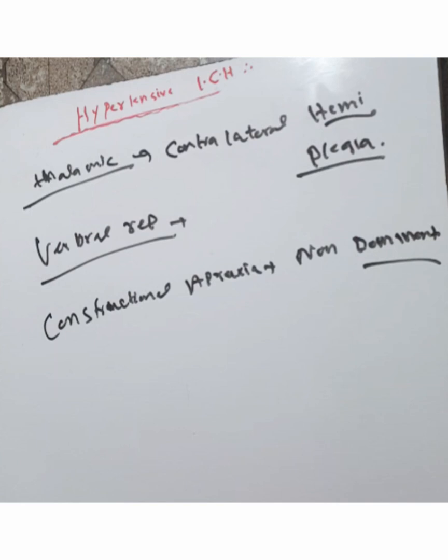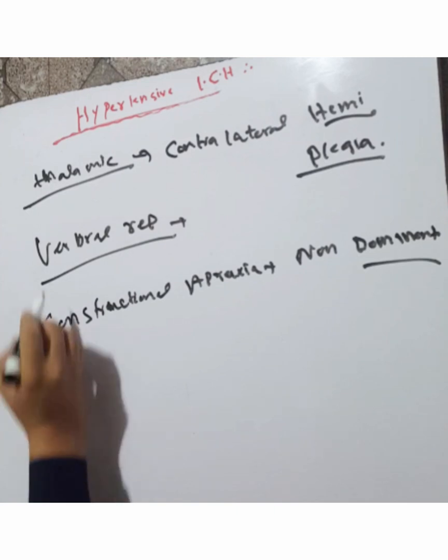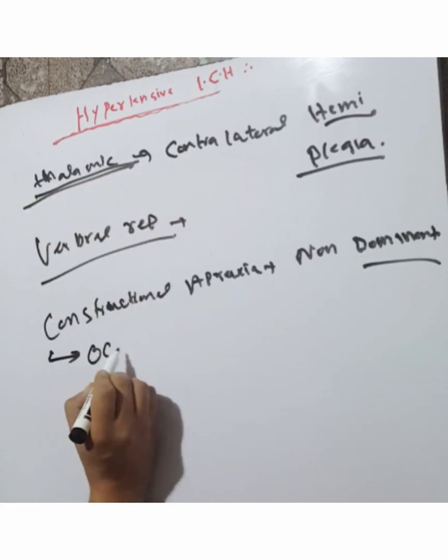Thalamic hemorrhage causes ocular disturbances. This is another important manifestation of thalamic hemorrhage.